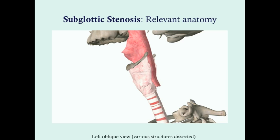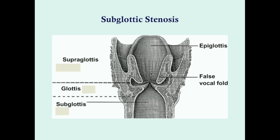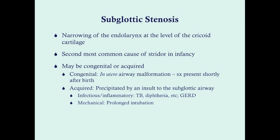If you have a stenosis in that region you'll have significant airflow issues. In this anterior view, various structures have been dissected including the mandible, teeth, oral cavity, and muscles. You can see the hyoid bone, thyroid cartilage, cricoid cartilage, and trachea. In a coronal slice, the vocal folds define the glottis; everything below is the subglottis and above is the supraglottis. Subglottic stenosis affects this region, extending down toward the trachea.